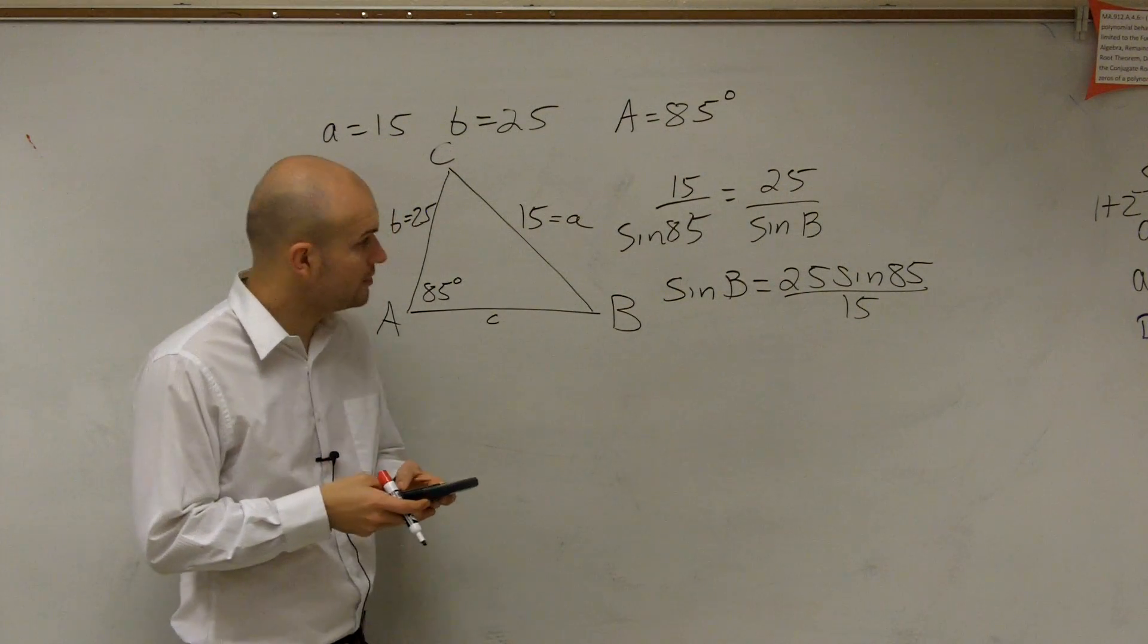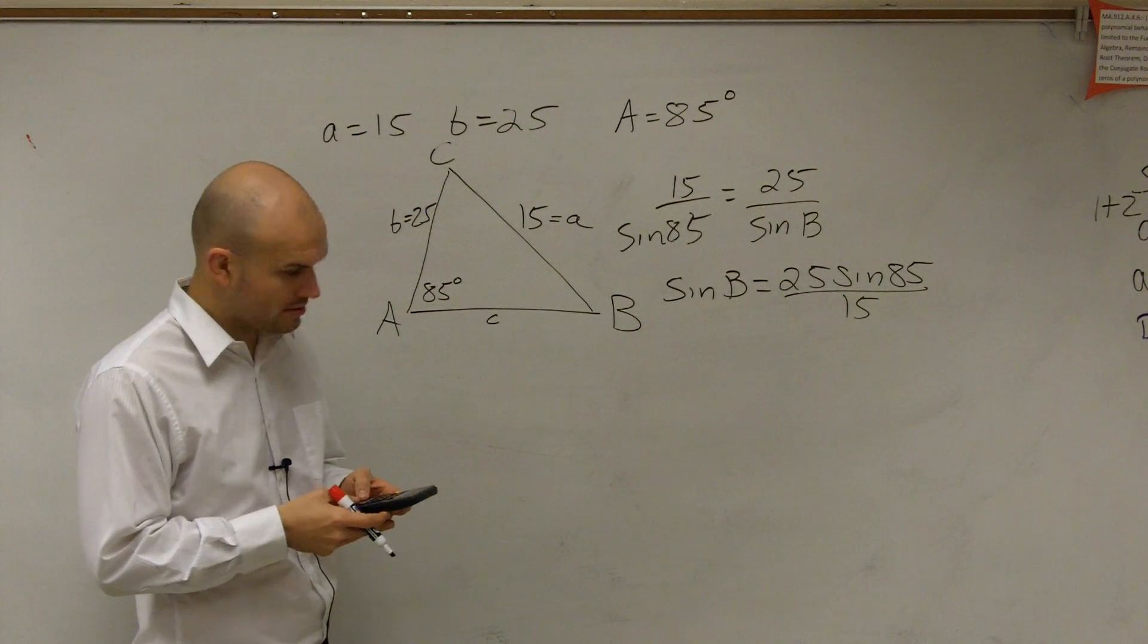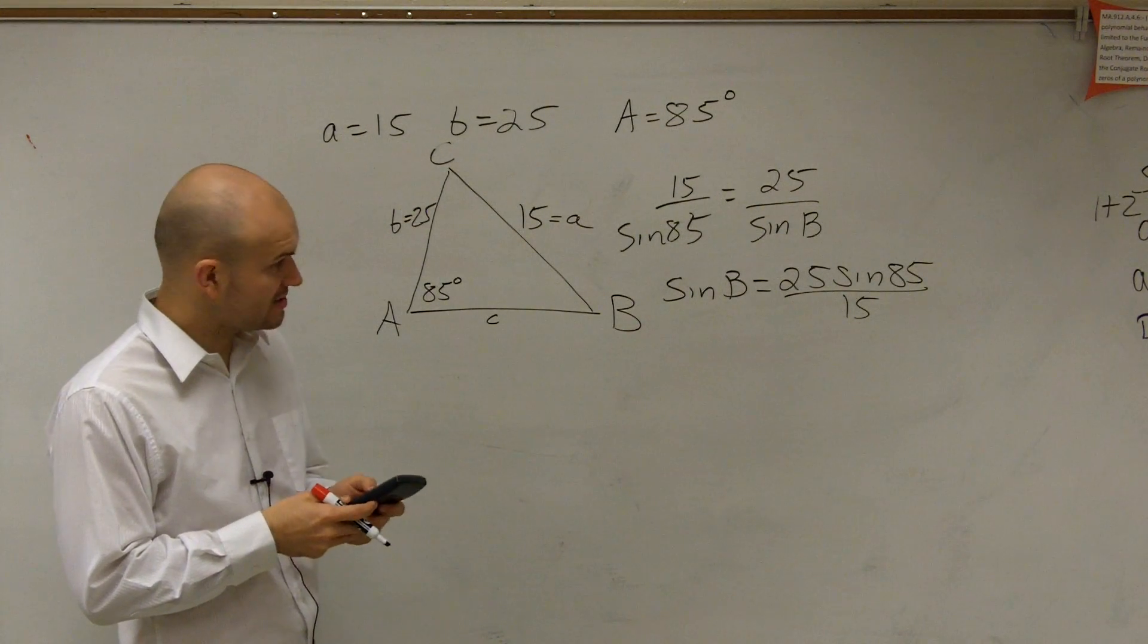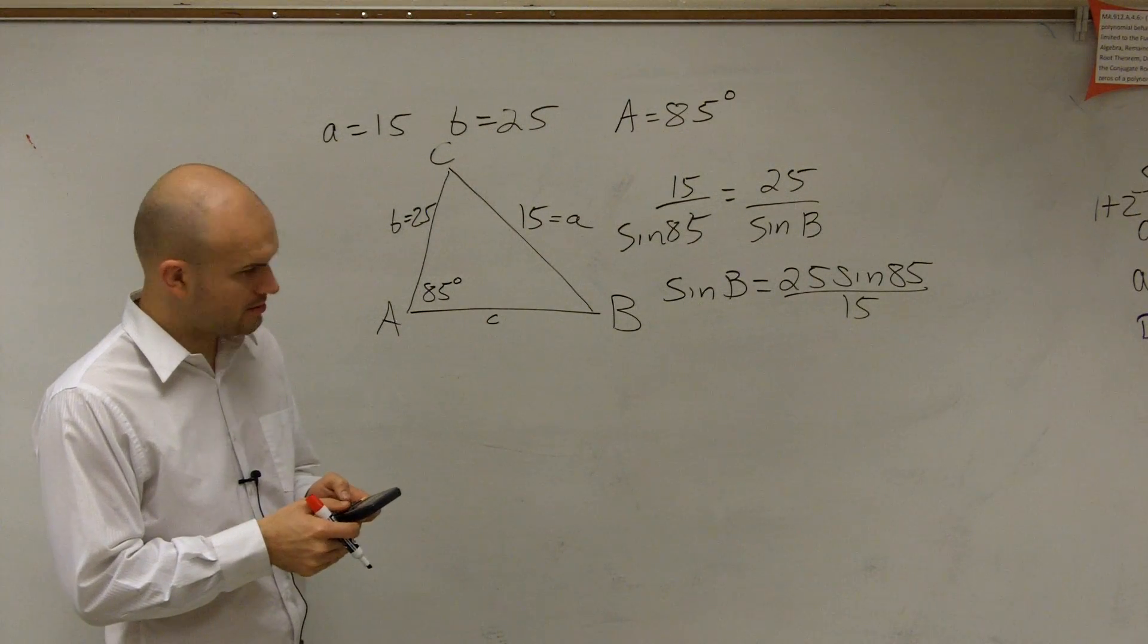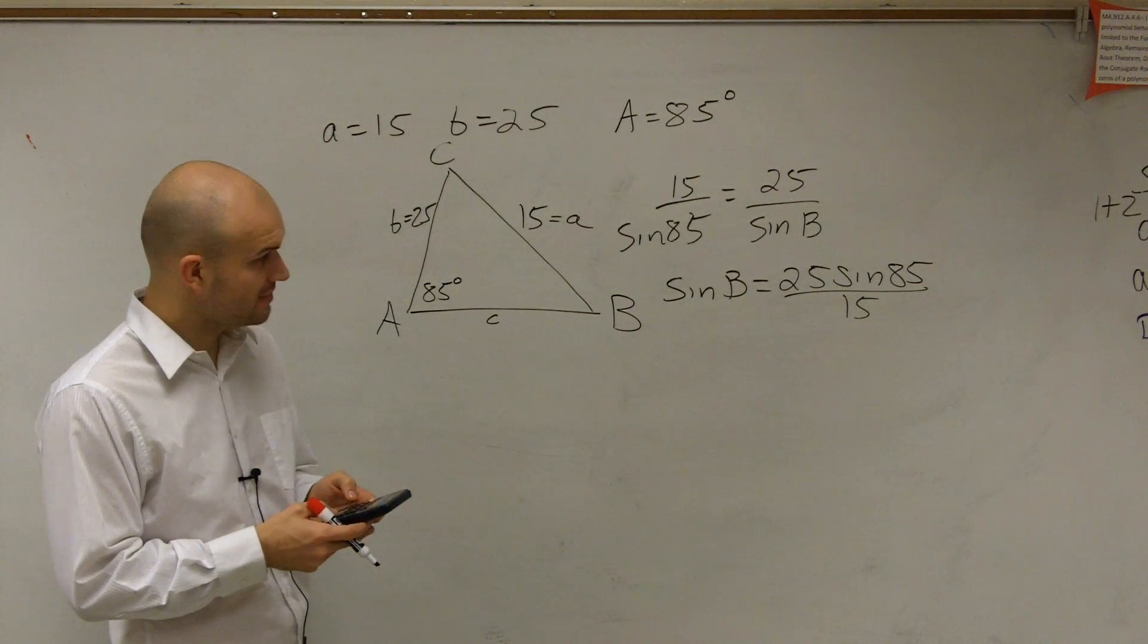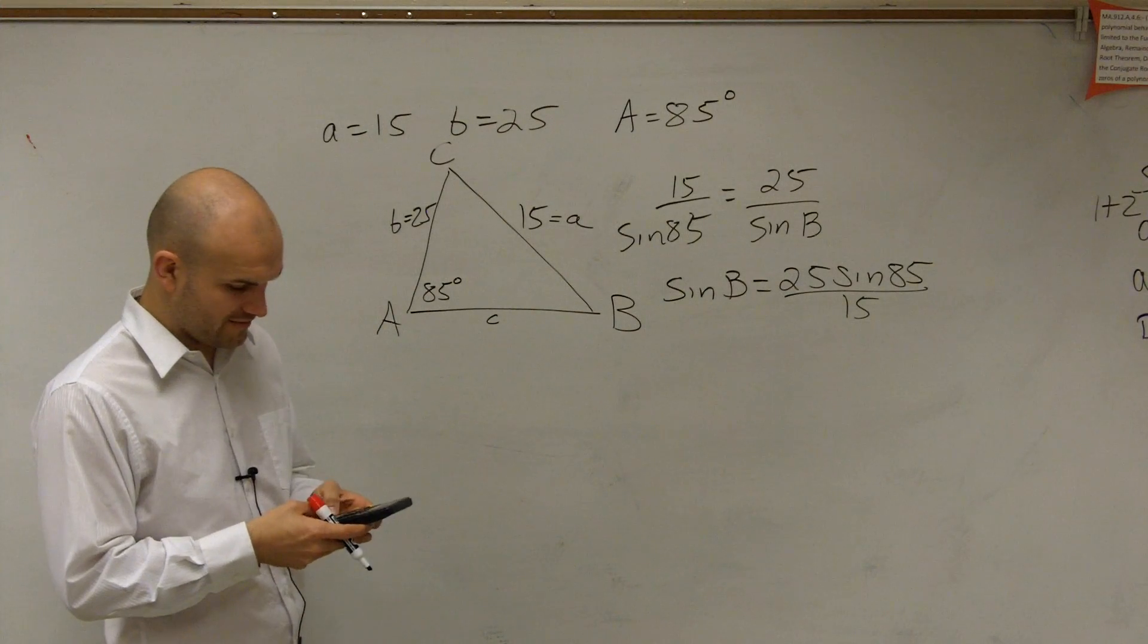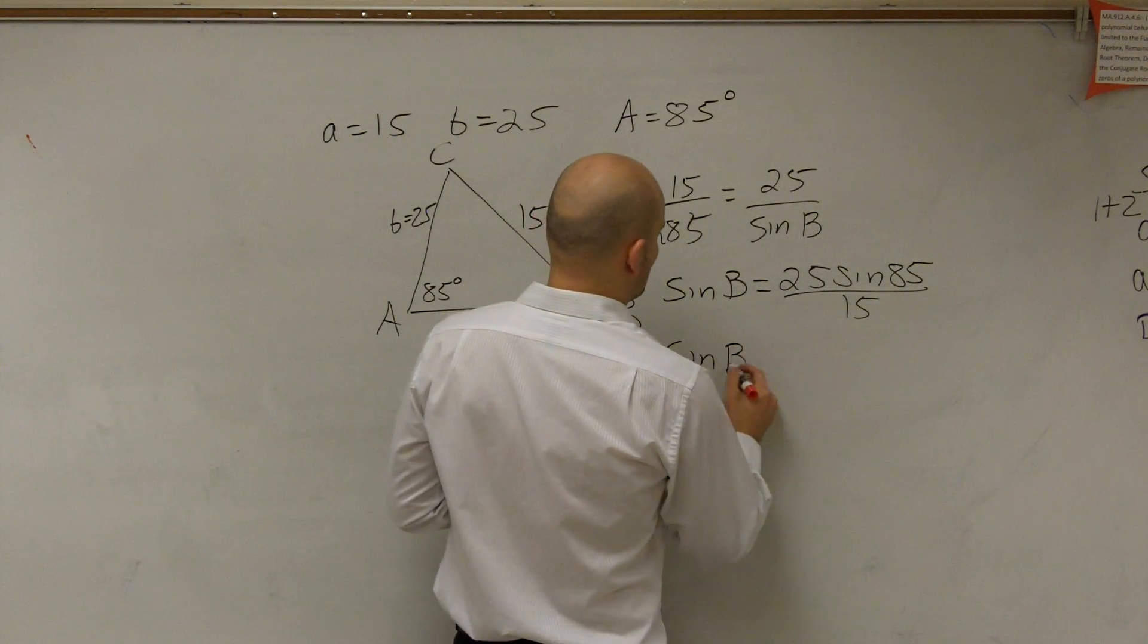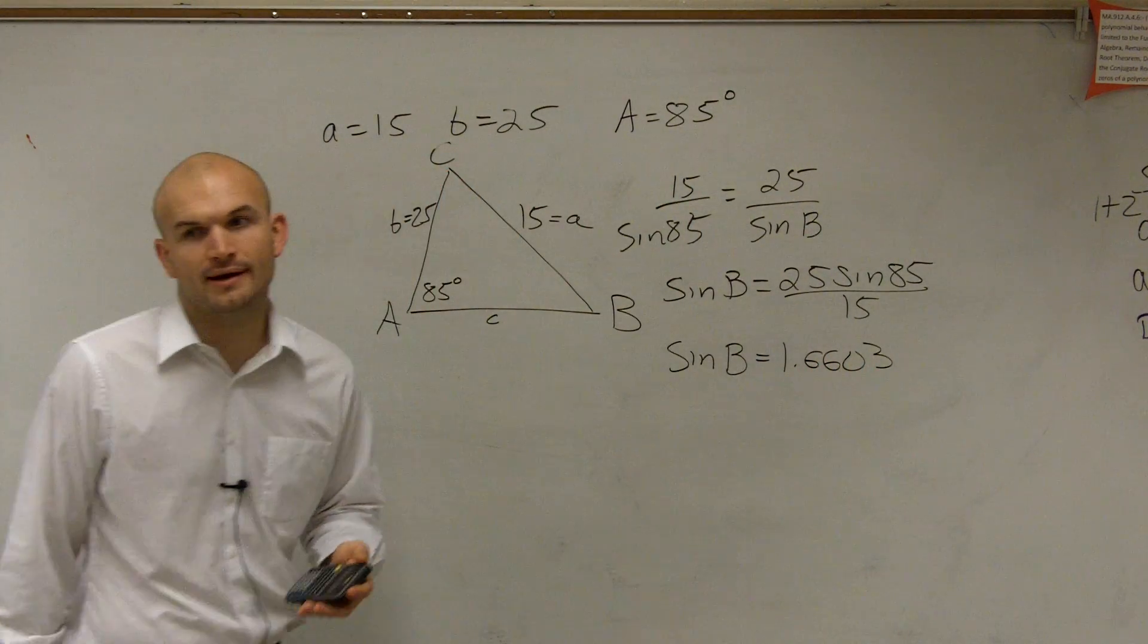So we do 25 times the sine of 85, 85 sine times 25 divided by 15. And what we get is the sine of B equals 1.663. Alright?